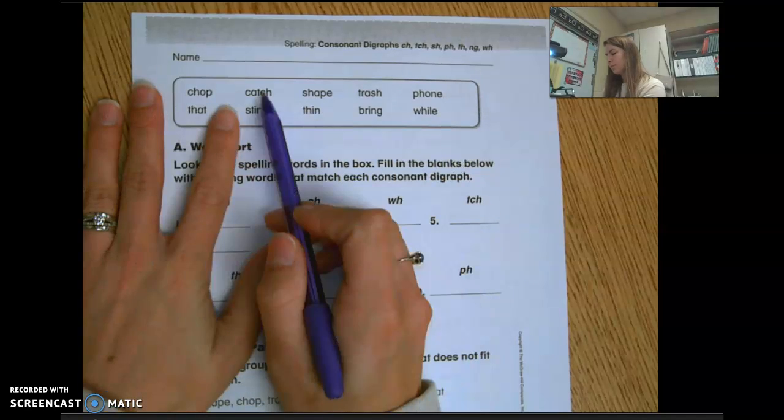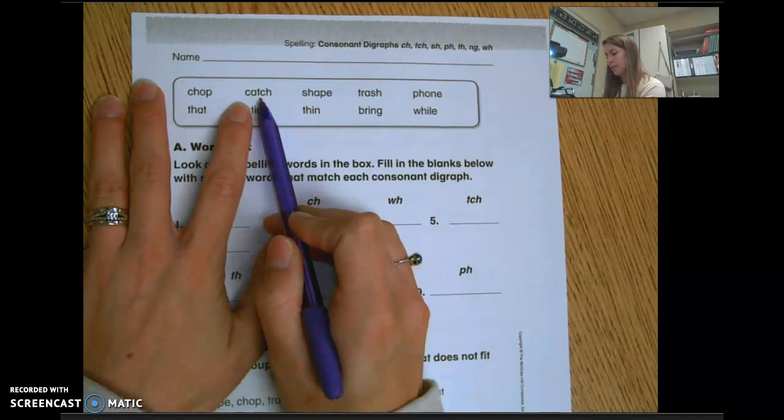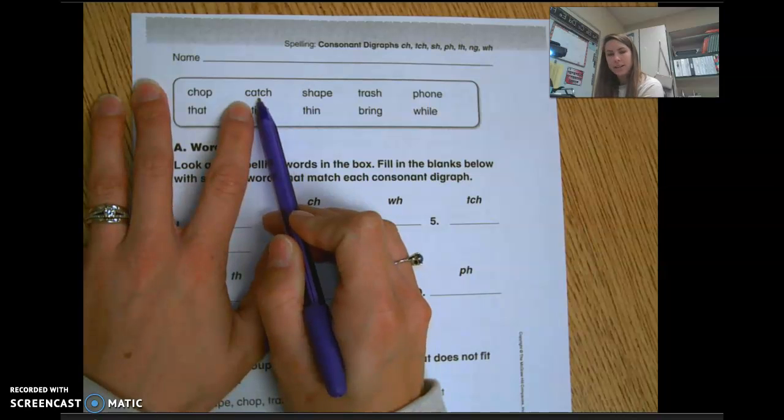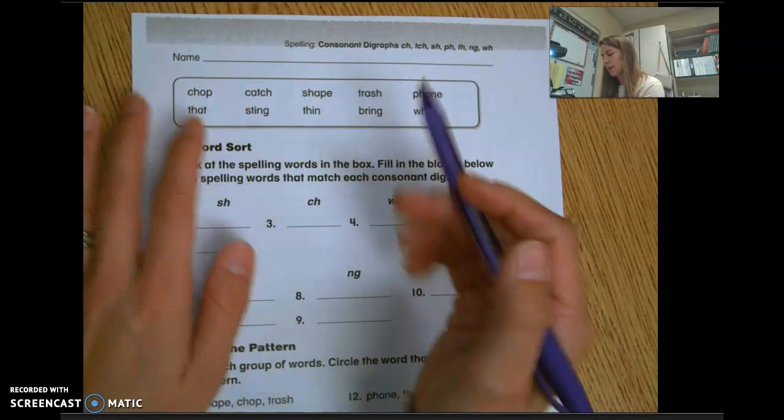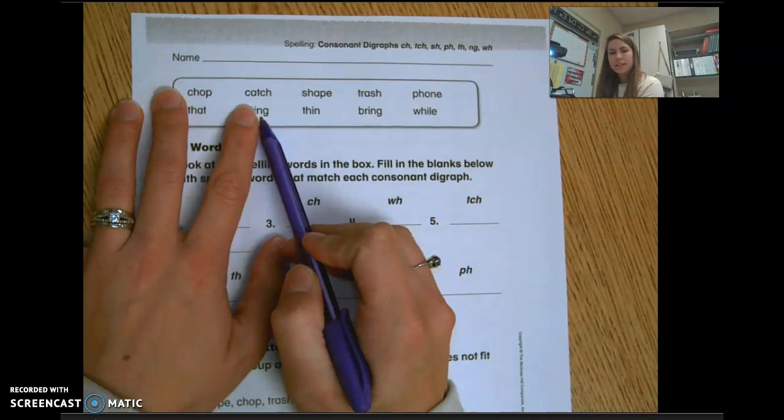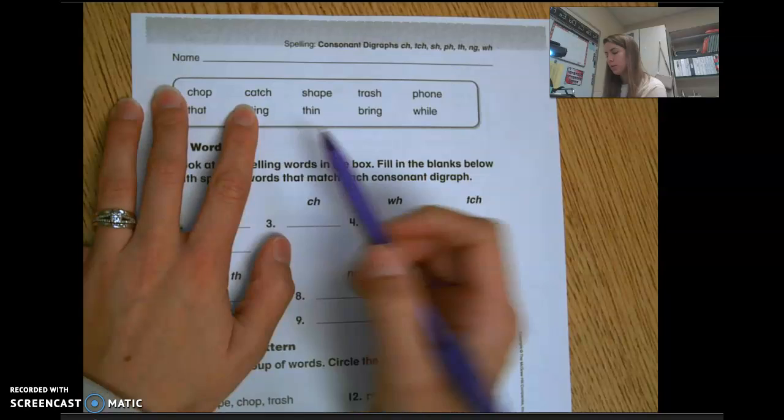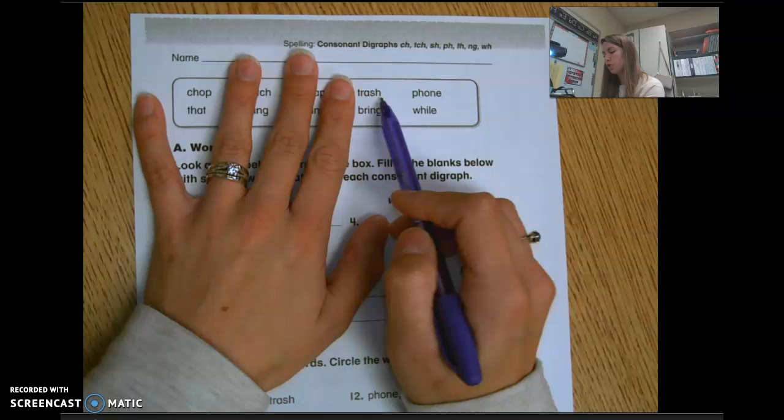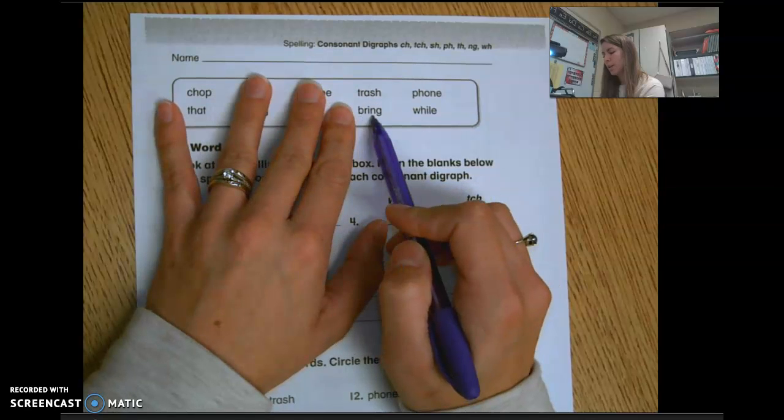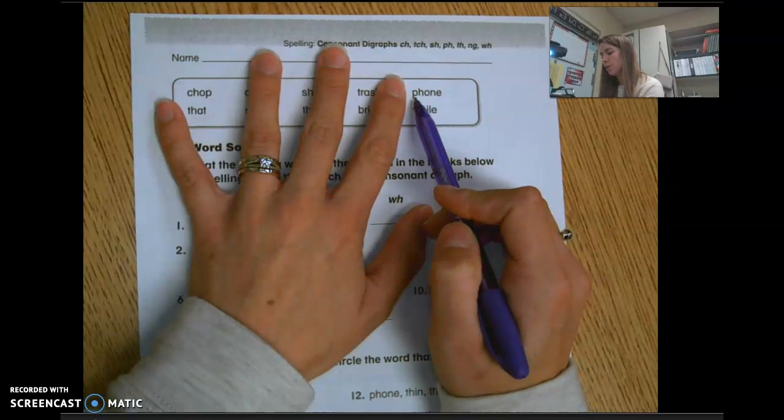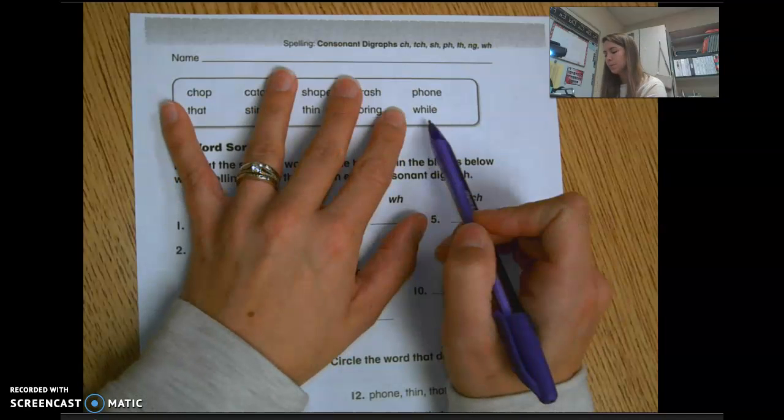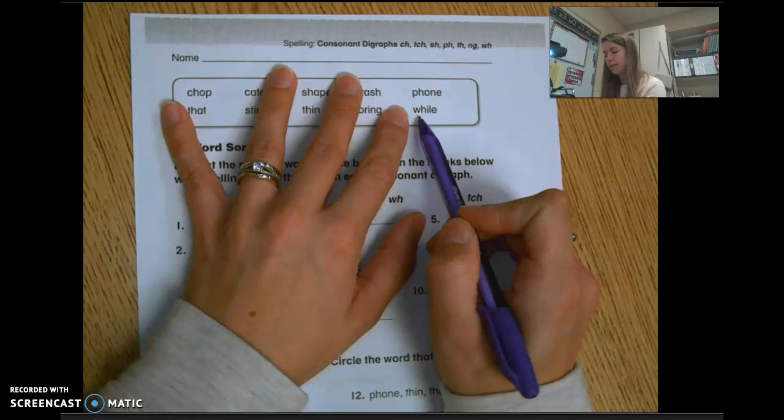I know when I have th, I have the th sound. Two letters but one sound that it makes, the consonant digraph. And tch is still the ch sound, but it does have that t there that doesn't make a sound of its own, like a silent letter. I have sting, that ng sound. I have shape, sh. Thin, trash, ring, phone - that ph makes an f sound. And while, the wh sound.